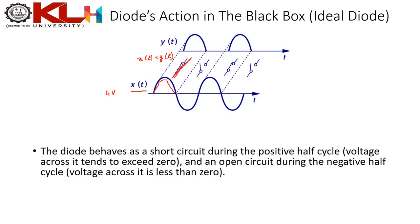In the negative half cycle, x(t) is completely cut off and y(t) = 0. So when x(t) is negative, y(t) is zero; when x(t) is positive, x(t) = y(t).